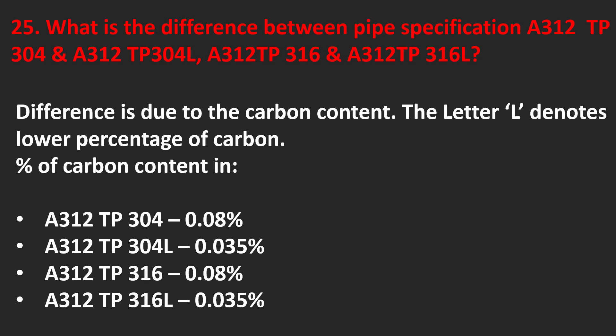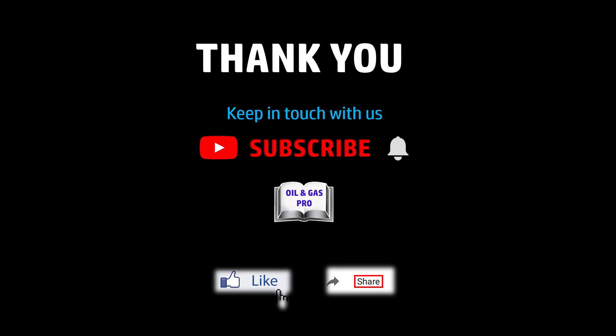What is the difference between pipe specifications A312 TP304 and A312 TP304L, A312 TP316 and A312 TP316L? The primary difference is in carbon content: TP304 has maximum 0.08% carbon, while TP304L has maximum 0.035% carbon. Similarly, TP316L has reduced carbon content compared to TP316.